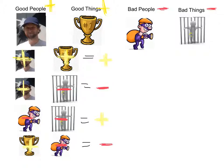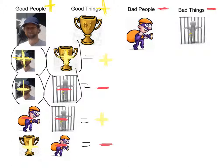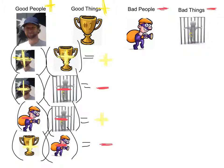So when good things happen to good people, that's a good thing, and a positive times a positive is a positive. When bad things happen to good people, that's a bad thing, and a negative times a positive or a positive times a negative is a negative. When bad things happen to bad people, that's actually a good thing, and a negative times a negative becomes a positive. And when good things happen to bad people, a positive times a negative is a negative. That's just a story for one way to remember the multiplication rules.